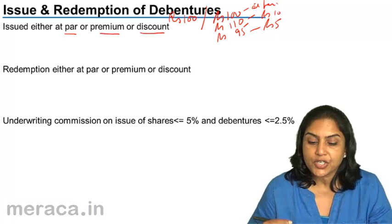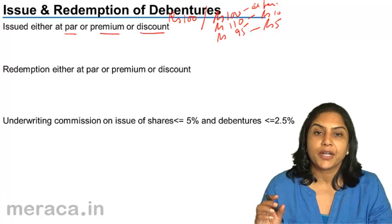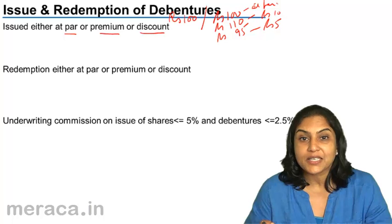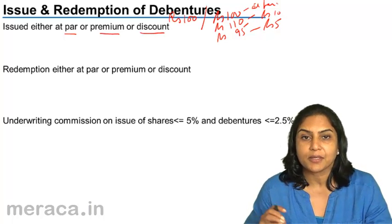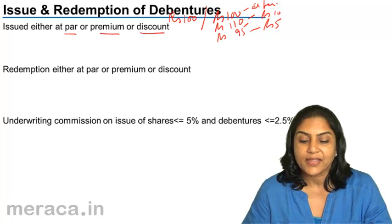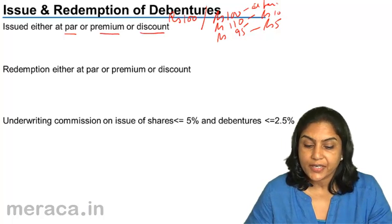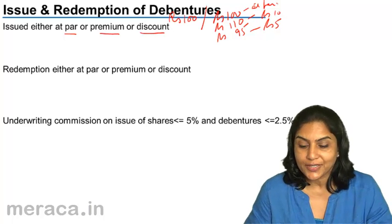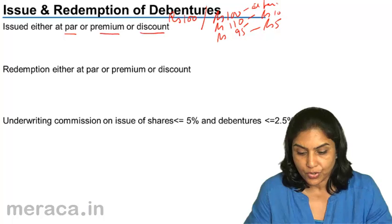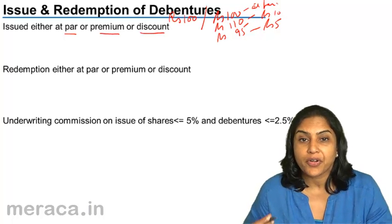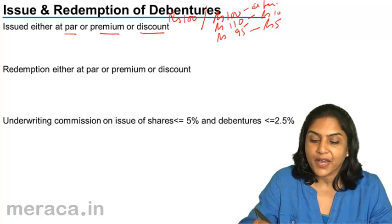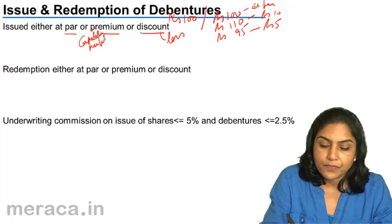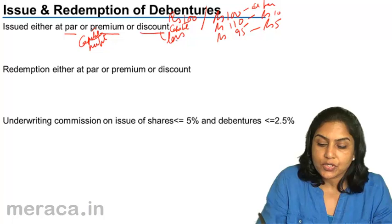When a debenture is issued at a premium, it means you issue a debenture with a face value of 100, but we get Rs. 110. The Rs. 10 is called securities premium — just like the premium on equity shares is also securities premium, and that is a capital profit. So issuing a debenture at a premium, the securities premium is a profit for the company. When debentures are issued at a discount, it means a Rs. 100 debenture is given to the debenture holder, but we raise only Rs. 95. So that Rs. 5 is a loss. Premium is a capital profit, whereas discount is a capital loss.